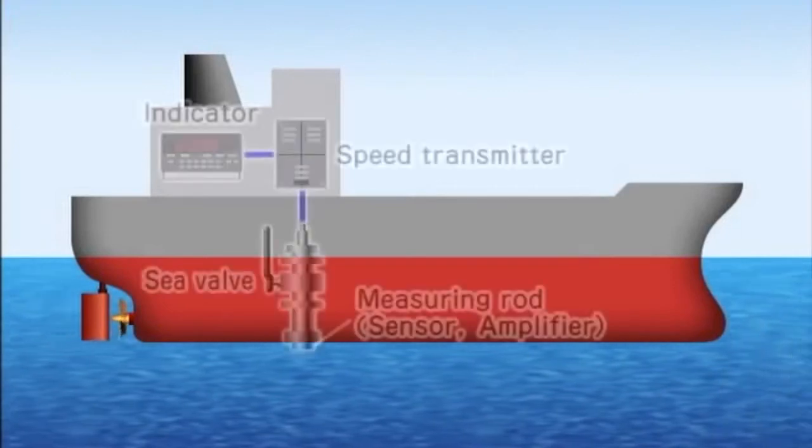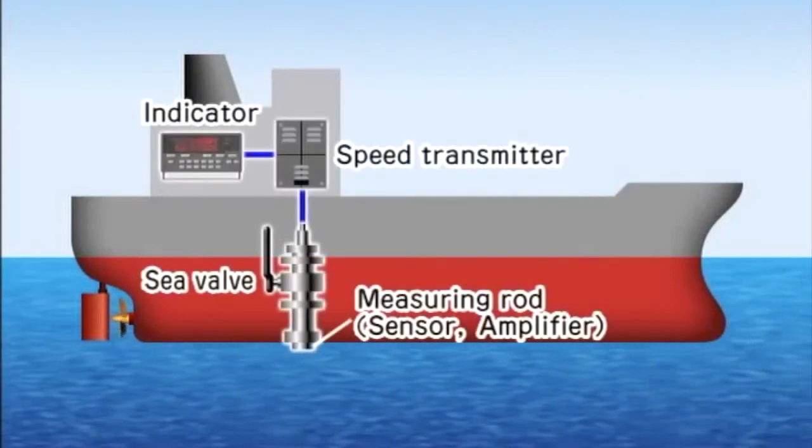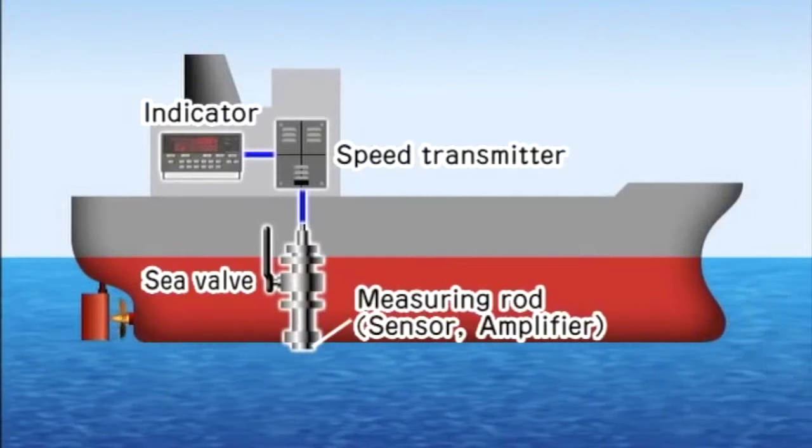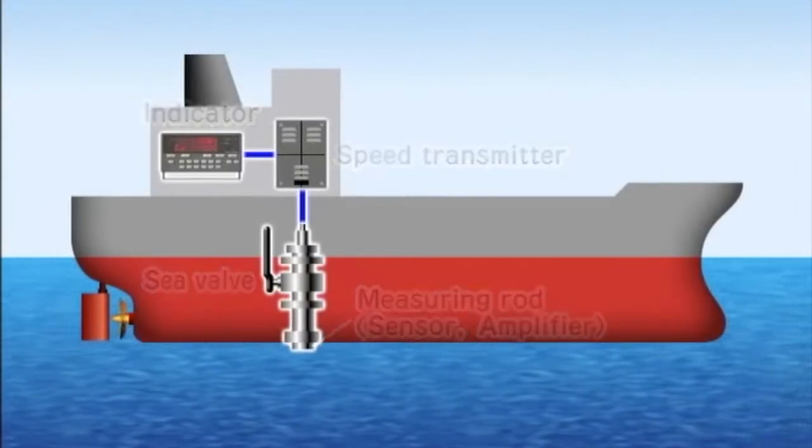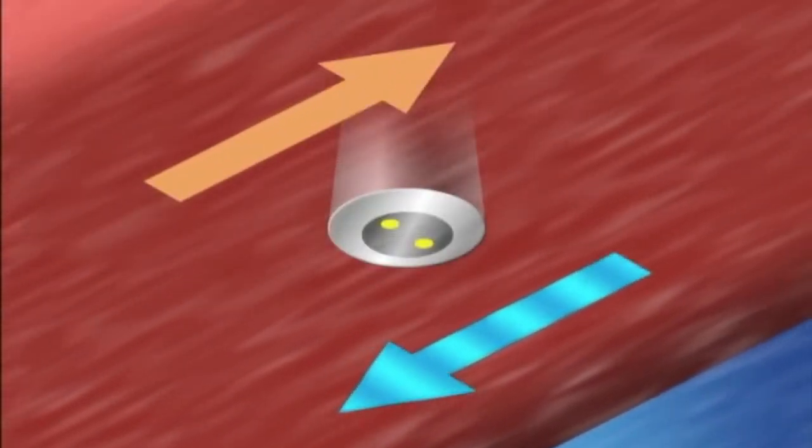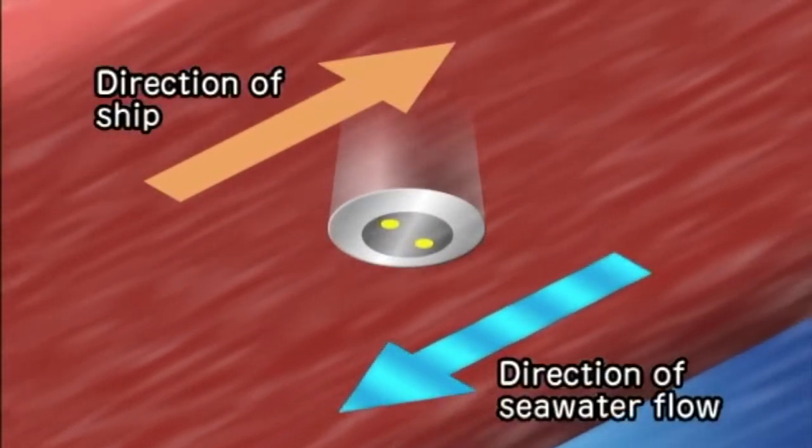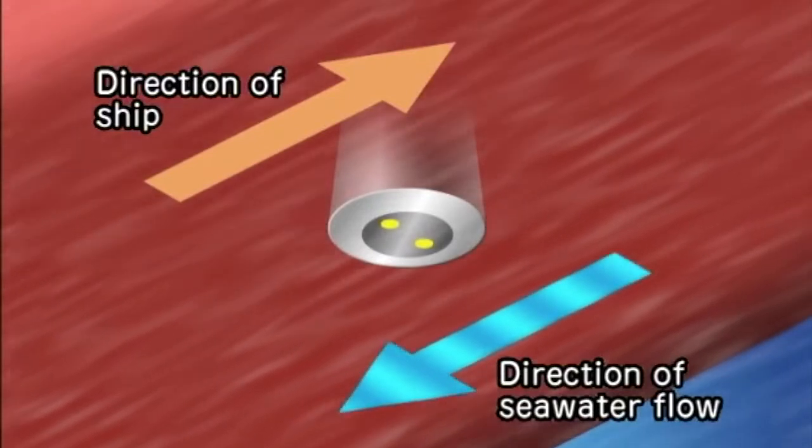The EM log system is composed of a sensor known as the measuring rod, an amplifier, a speed transmitter and an indicator. The sensor is surrounded by a magnetic field and is attached to the tip of the measuring rod, which protrudes from the ship's bottom into the sea.